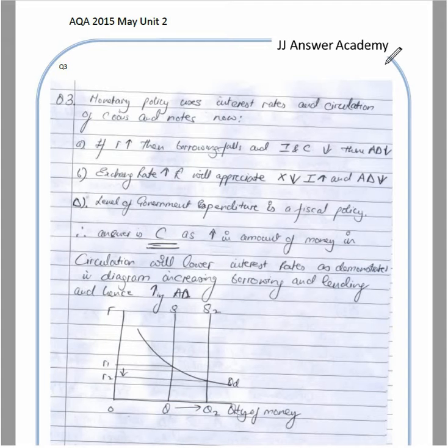Generally in monetary policy, it uses interest rates and the circulation of notes and coins. In this question, we're looking at option A. If the interest rate increases, then borrowing falls and investment and consumption will fall, therefore AD will fall.